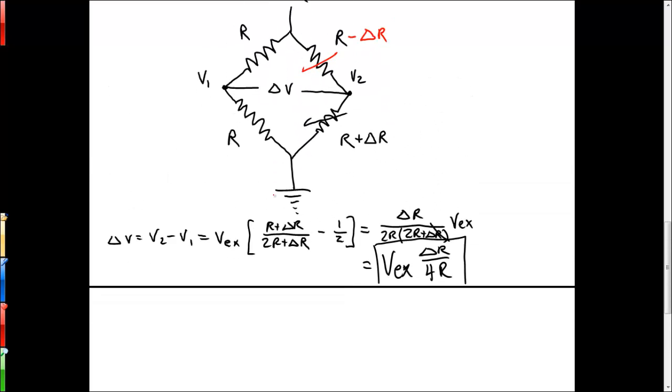So to analyze this one, we know that delta V equals V2 minus V1, which is equal to the voltage at V2, which is the excitation voltage times R plus delta R over the resistance of the entire length of that circuit, which is 2R, minus the voltage in V1, which is just going to be R over 2R, which equates directly to VEX times delta R over 2R.